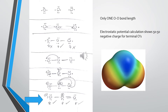The problem with this are the experimental facts you see on the right. When you measure the structure of ozone experimentally, you only see one unique oxygen-oxygen bond length. If ozone were to have the Lewis structure indicated in the lowest panel, that structure has an oxygen-oxygen single bond and an oxygen-oxygen double bond. Single bonds are longer than double bonds — they're certainly not the same in terms of geometry. And yet experimentally, there's only one unique oxygen-oxygen bond length in ozone.